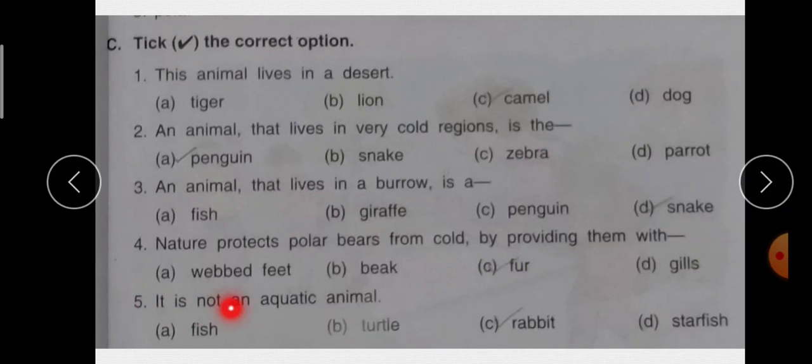Last है it is not an aquatic animal. कि इन में से कौन सा जो animal है aquatic नहीं है जो पानी में नहीं रहता है? Fish, turtle, rabbit, starfish. तो correct answer है C that is rabbit. ठीक है rabbit is a land animal.